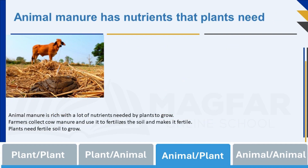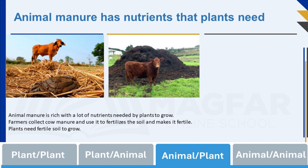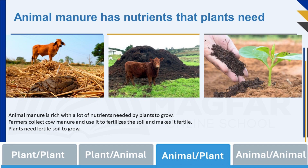Cow manure is a nutrient-rich fertilizer for plants. It's not just waste — it's a valuable resource. When cows eat plants, their bodies break down the food, and what comes out as manure is loaded with essential nutrients like nitrogen and phosphorus. These nutrients act as plant food. Farmers collect this cow manure and spread it over their fields. This process of adding nutrients to the soil to make it more fertile is called fertilization.